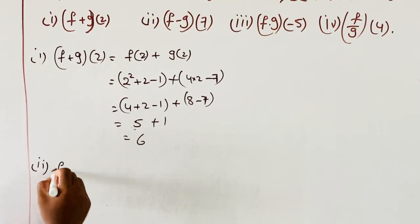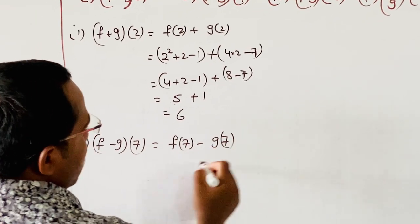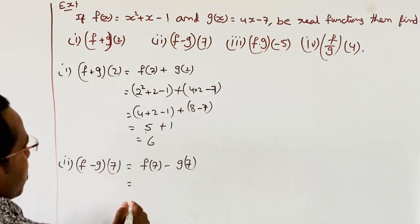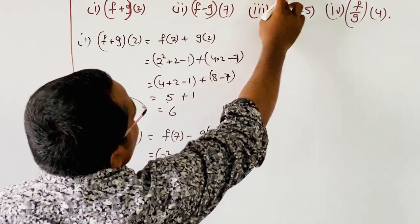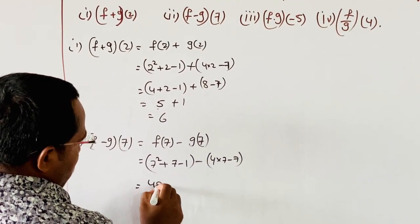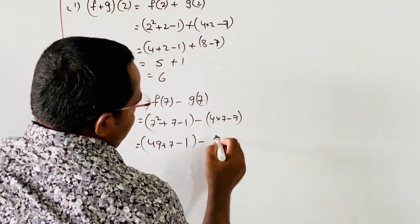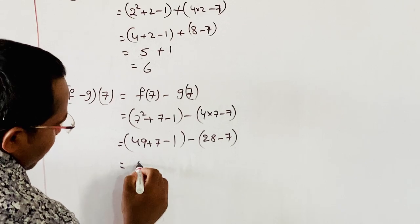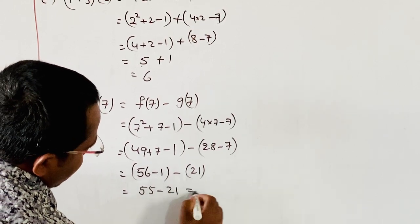Second, F minus G of 7 equals F of 7 minus G of 7. F of 7: 7 squared plus 7 minus 1 equals 49 plus 7 minus 1 equals 55. G of 7: 4 into 7 minus 7 equals 28 minus 7 equals 21. Therefore F minus G of 7 equals 55 minus 21 equals 34.